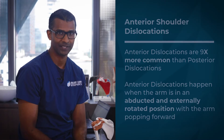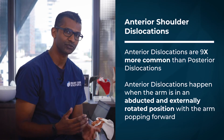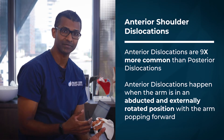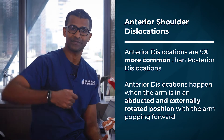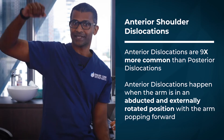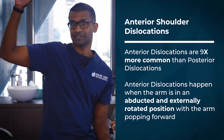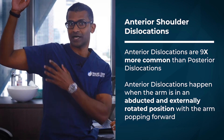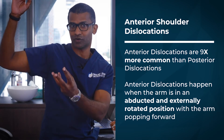What's the difference between an anterior shoulder dislocation and a posterior shoulder dislocation? Anterior shoulder dislocations happen when the arm is in an abducted and externally rotated position, with the arm popping forward.